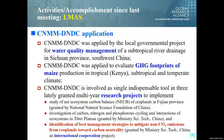In the last year, the C-LIM-DNDC model was applied by a local governmental project for water quality management of a subtropical river drainage in southwestern China. It was also applied to evaluate greenhouse gas footprint of crop production systems in different climate zones, including the tropical zone in Kenya, subtropical in southwest China, and the temperate in north China.